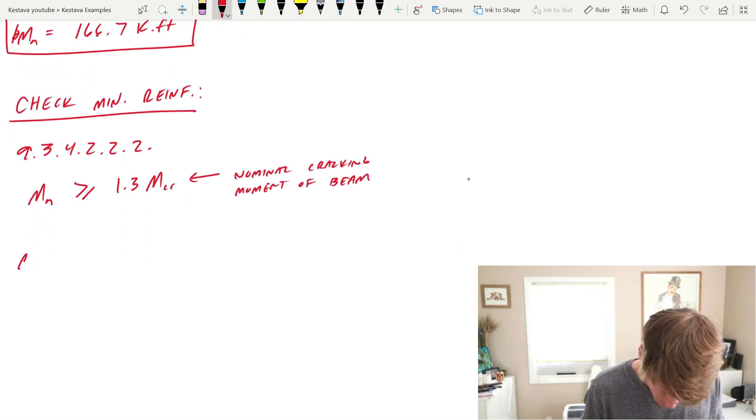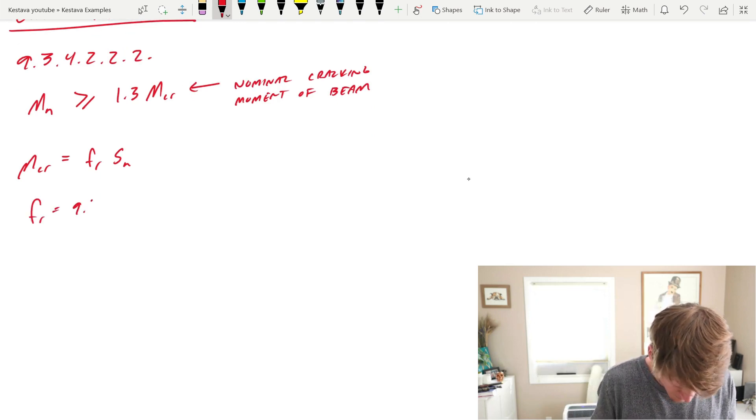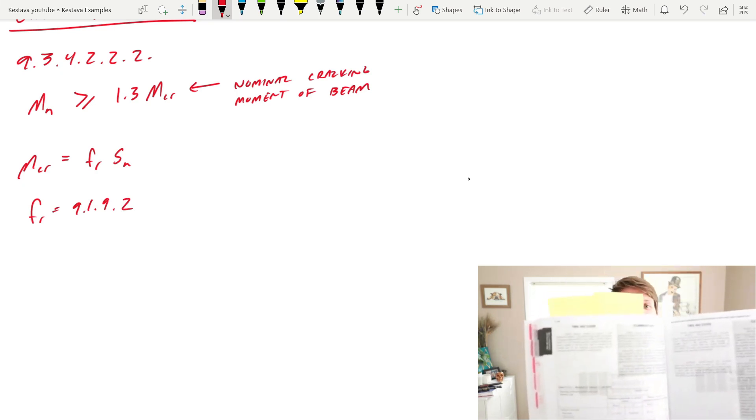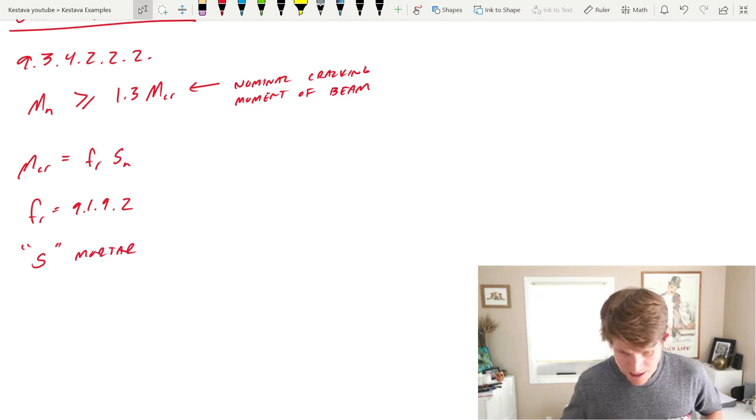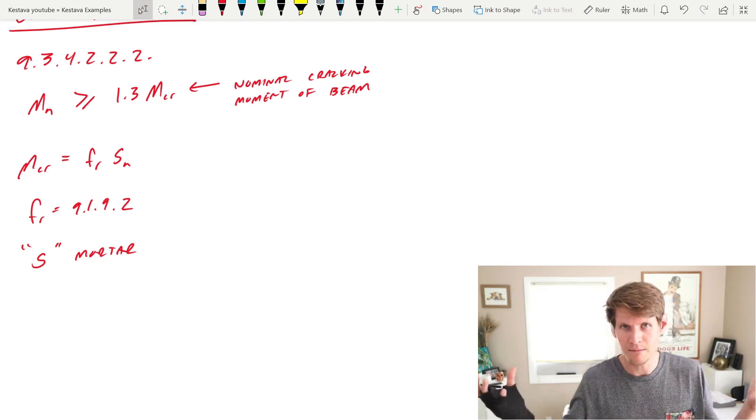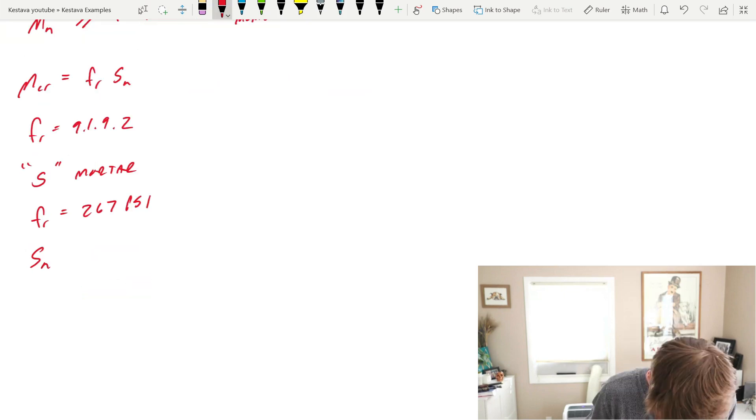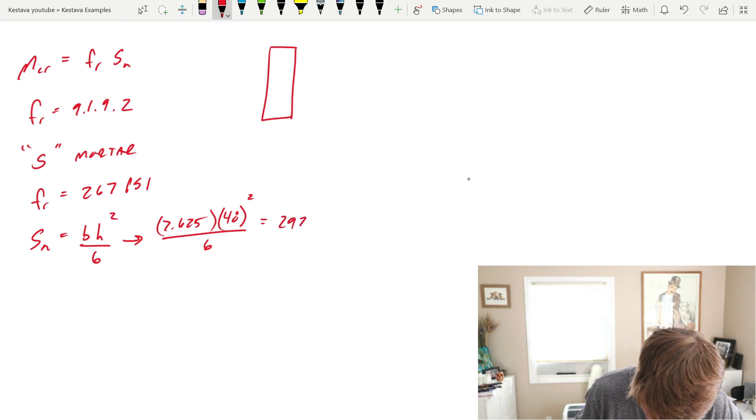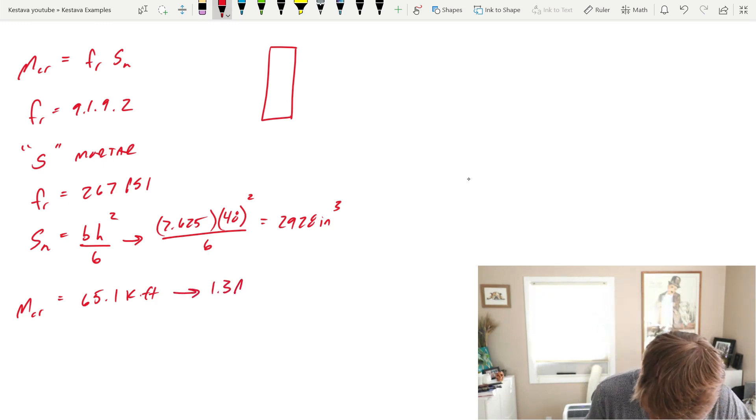Well, hang on a second. MCR is equal, very simply, FR times SN. And FR is the modulus of rupture. And FR can be found in 9.1.9.2. And it's simply a table that's given based on some parameters of your CMU. We will say that we're using S-type mortar and the direction of flexural tensile stress is parallel with the bed joints in running bond because we have a beam and our tensile reinforcement is parallel in that beam. FR, or sorry, just FR equal to 267 PSI. S-sub-N, we all know, is just equal to BH squared over 6, which gets us 2,928 inches cubed. MCR is equal to then 65.1 kip-feet. And that's after you divide by 1,000, you divide by 12. Make sure you keep all of your units consistent. It's very important throughout.